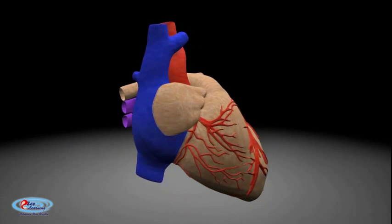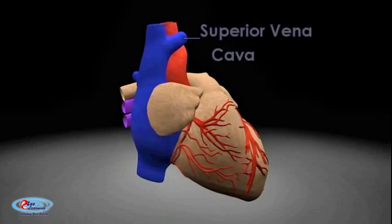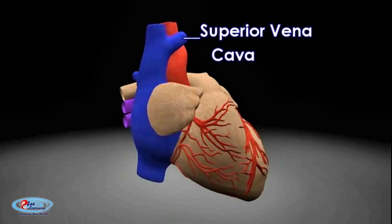The superior vena cava is a large diameter, yet short, vein that carries deoxygenated blood from the upper half of the body to the heart's right atrium. It is located in the anterior right superior mediastinum. It is also known as the cranial vena cava in animals.